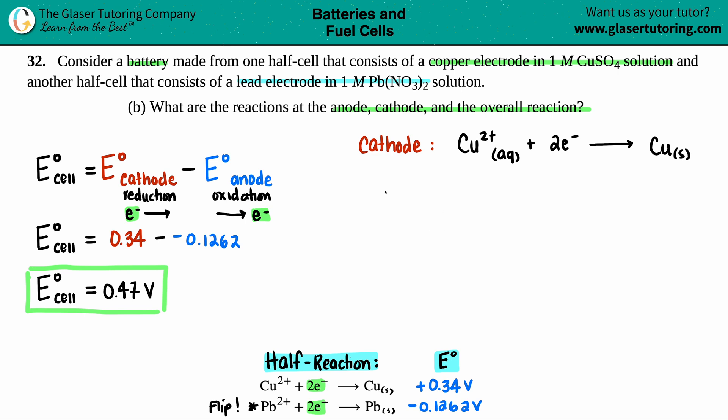So now the Pb solid is going to be on the left, yielding Pb2+, aqueous, plus the two electrons. So we just have the anode and the cathode. We did that already. And now we just need the overall reaction.